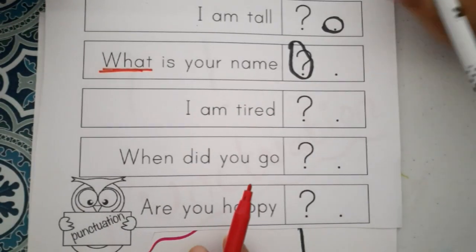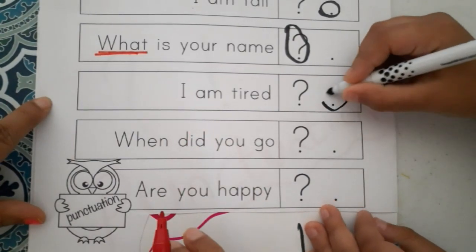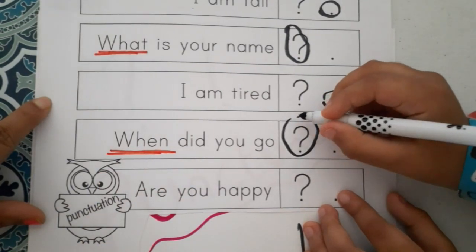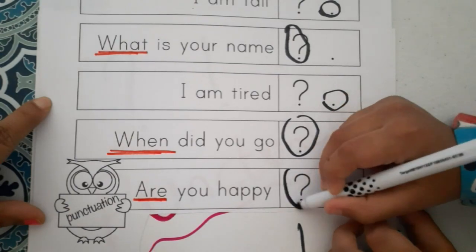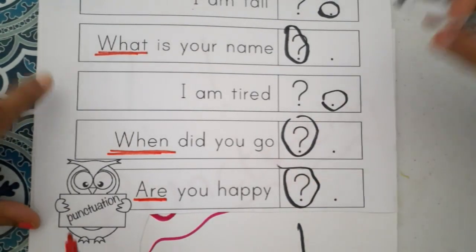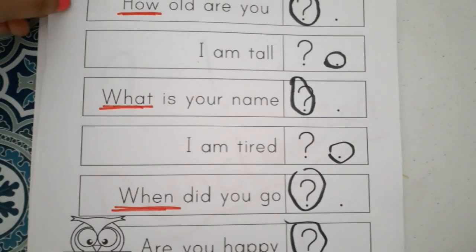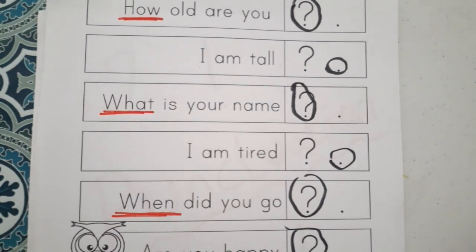I am tired - period. When did you go? Question mark. Are you happy? Question mark. So you need to change and put the correct punctuation - question mark where you're asking, period where you're telling an answer, and exclamation mark where you show excitement.